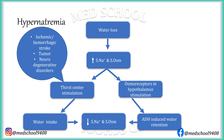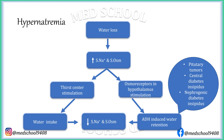The same pathologies can also affect the thirst center. Pituitary tumor or other diseases involving the pituitary can hamper ADH secretion. Central diabetes insipidus is caused by inability of the pituitary to synthesize or secrete ADH. Nephrogenic diabetes insipidus is caused by inability of the kidneys to respond to ADH, due to a defect in V2 receptors, aquaporin channels, or other proteins involved in the process.